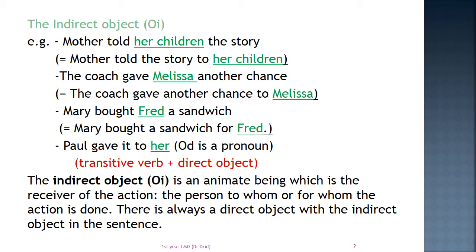The second type of object is the indirect object. Let's take an example. Mother told her children the story. We notice here that there is a direct object first. The mother told what? The mother told the story. So, the story is the direct object. This means that the indirect object is always used with the direct object — they go together. We have two objects in the sentence.